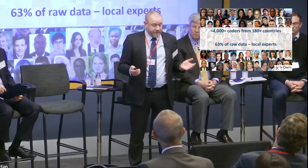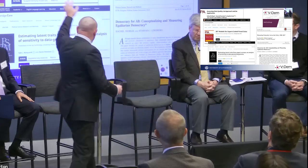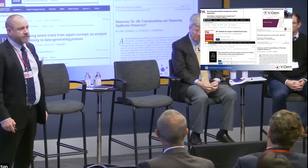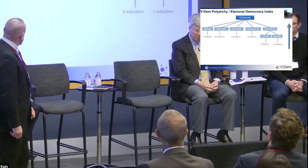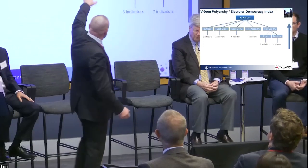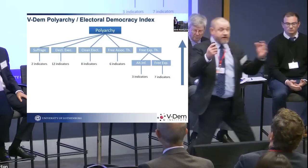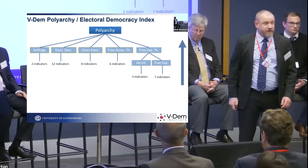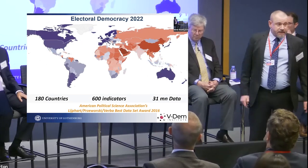We aggregate those expert ratings using the latest Bayesian IRT — Item Response Theory — modeling, developed over six years with methodologists and published and vetted by the international scientific community. This is now considered the gold standard. Those indicators are then aggregated up into things like the polyarchy index — Dahl's idea of electoral democracy with all its different components.